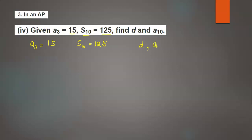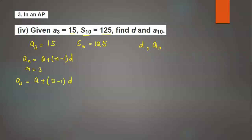We have the formula: an equals a plus n minus 1 into d. Put n equals 3, so we get a3 equals a plus 3 minus 1 into d. Since a3 is 15, we get 15 equals a plus 2d. This is our first equation.